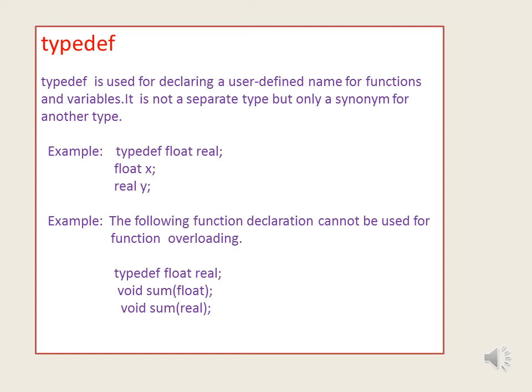For example, void sum(float) and void sum(real) — here real is just a typedef for float, so both functions take one float value argument. I am just giving a new name to the existing type. So both mean the same: sum of float. If you use typedef and give a different name, it does not make it a different type. It is just a synonym, and the function is not considered a different type for overloading purposes.